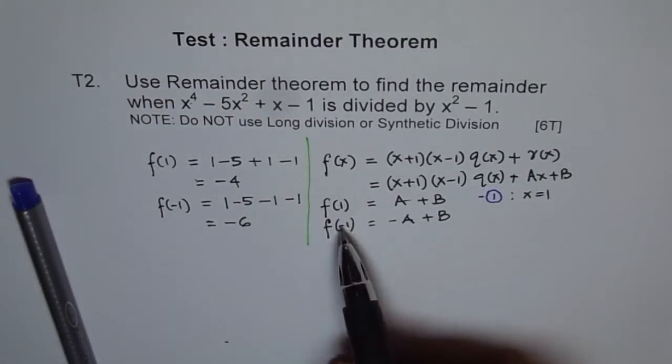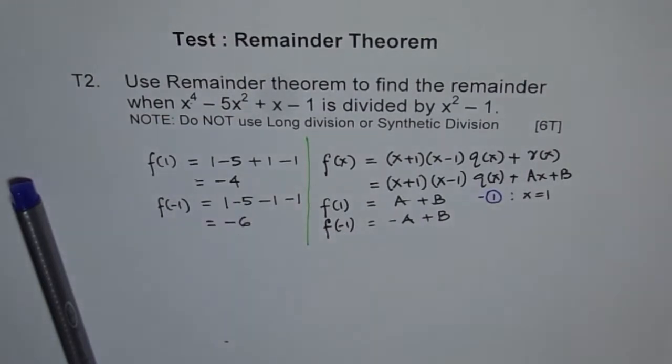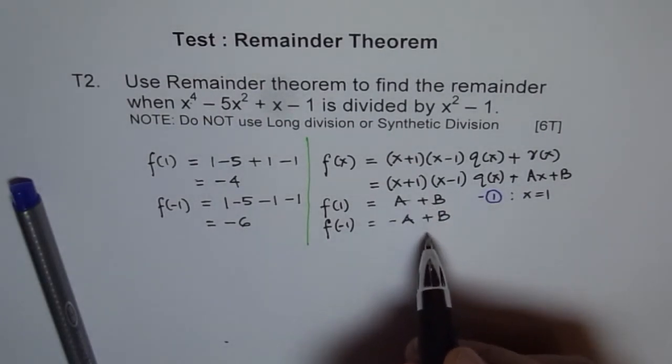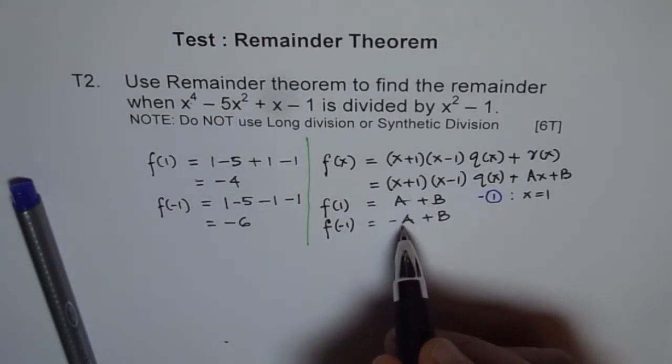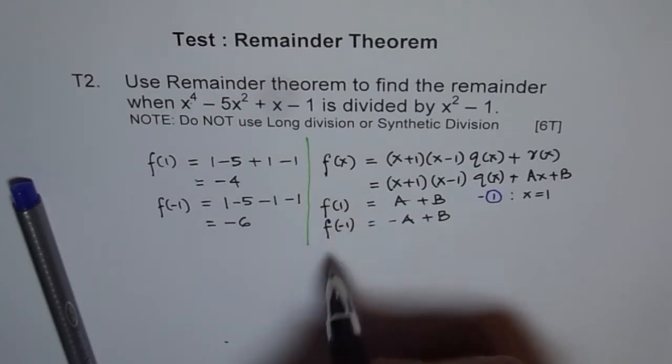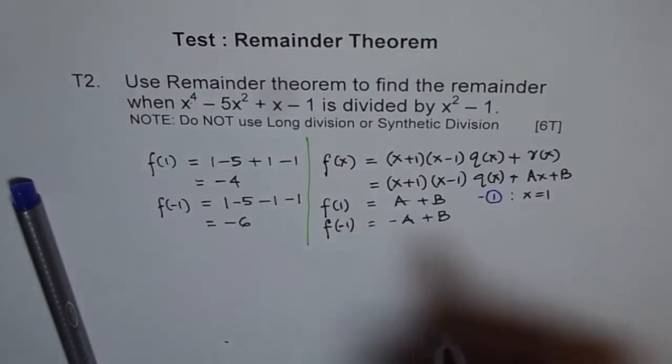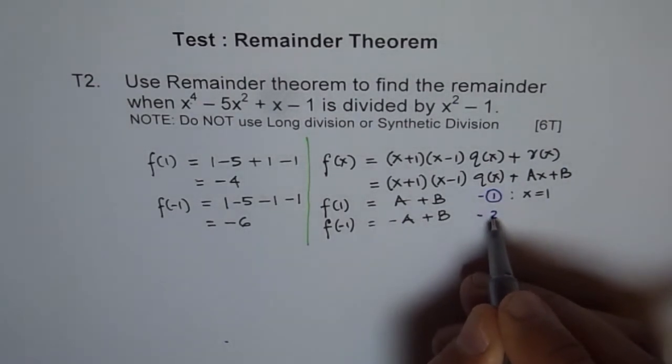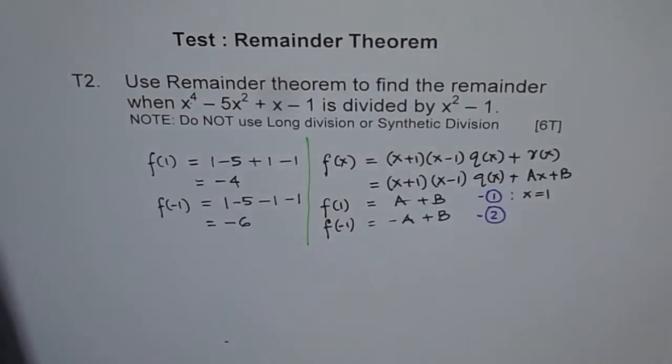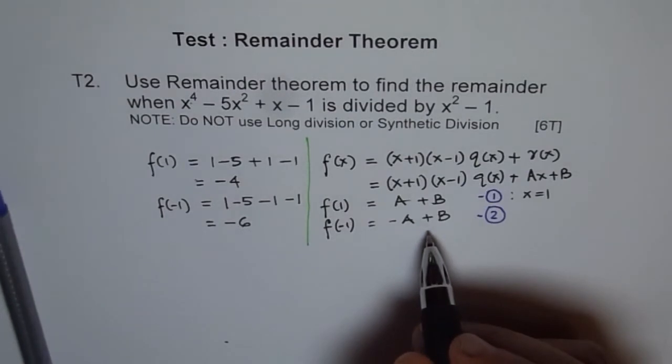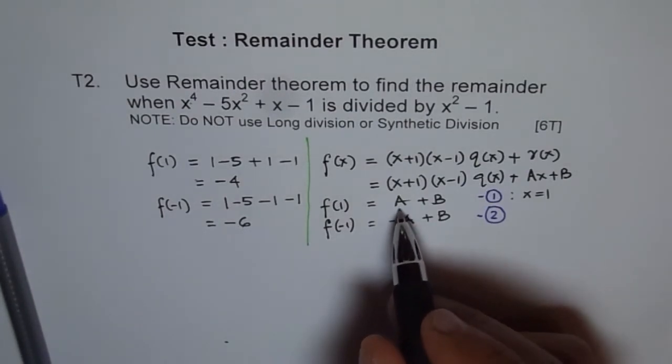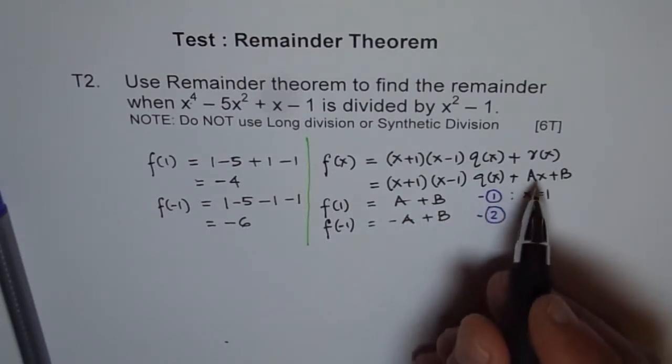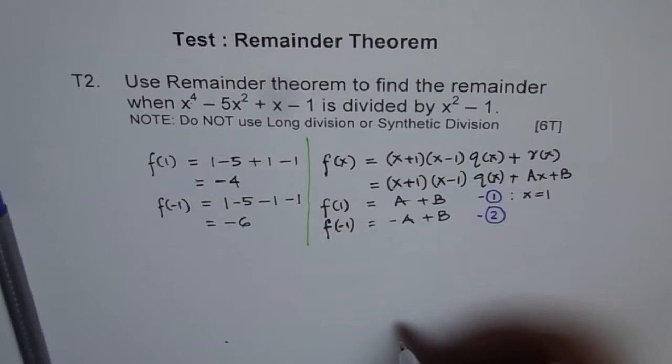Fortunately, we know what f of 1 and f of minus 1 is. There they are. Now if I add them up, then I can cancel out a and find b. And if I subtract them, then I get the value of a's. Do you see that? Now once I get my a and b, I know what my remainder is. Do you see the strategy?